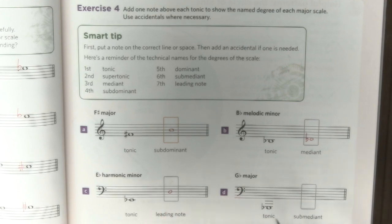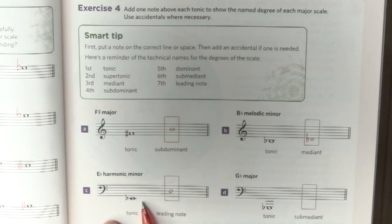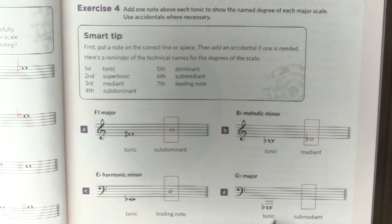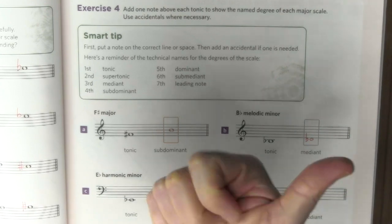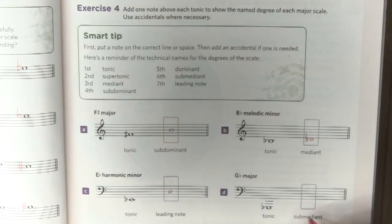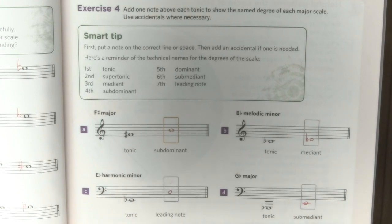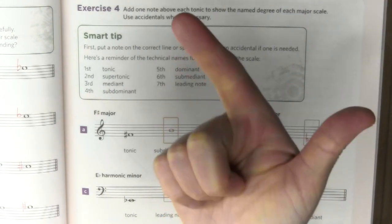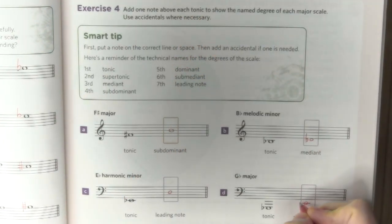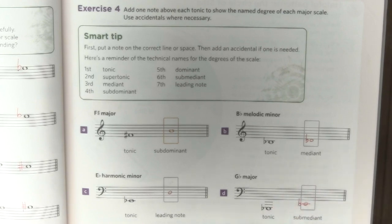G-flat major: the tonic is G-flat and we need the submediant, which is the sixth degree — Sol, La, Si, Do, Re, Mi — so that's an E. In bass clef (plus two), we write a middle-C position note. Would this be flat? Mi is the second flat in any key signature, so yes — we write E-flat.